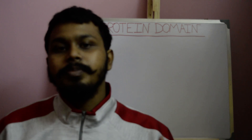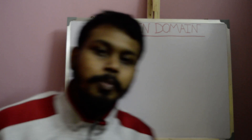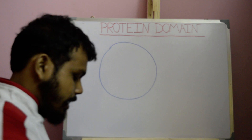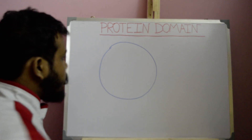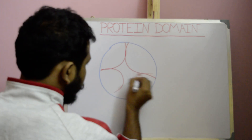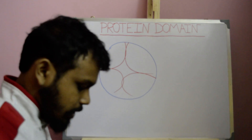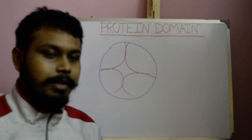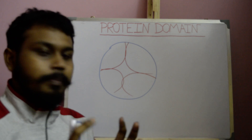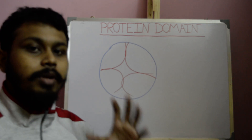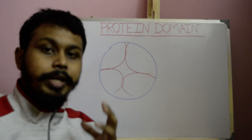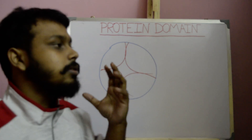Suppose this is a protein and it has four subunits. Each subunit is a peptide chain, and all four subunits together make the protein functional by their particular conformation.